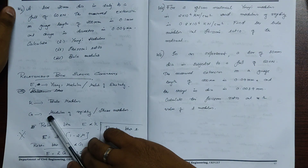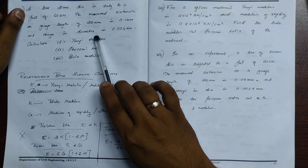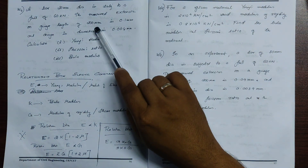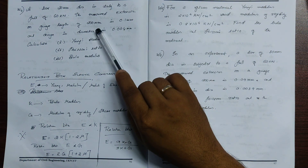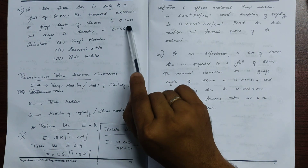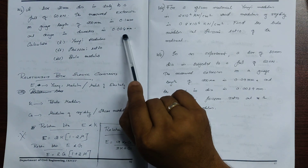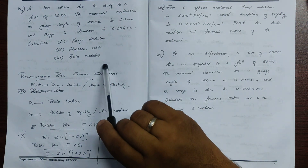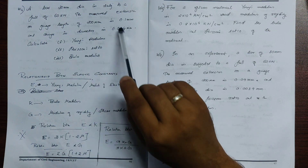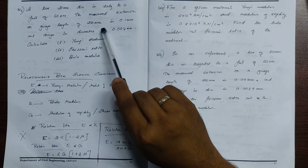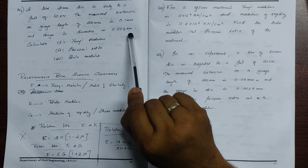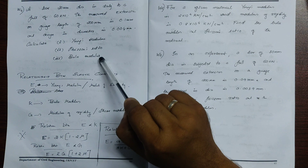Next problem: a bar with 30 mm diameter is subjected to a pull of 60 kilonewtons. The measured extension on a gauge length of 200 mm is 0.1 mm, and the change in diameter is 0.004 mm.